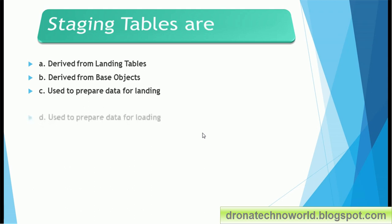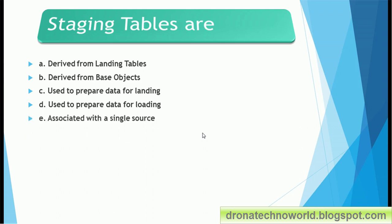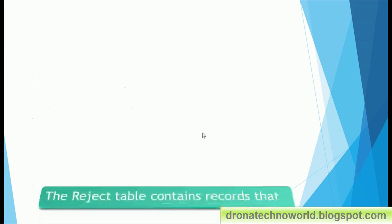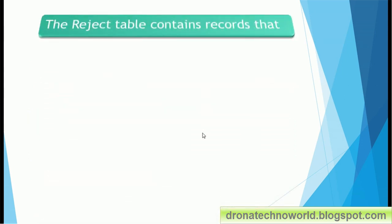Next: staging tables — option A: are derived from landing tables; option B: are derived from base objects; option C: are used to prepare data for landing; option D: are used to prepare data for loading; option E: are associated with a single source. The correct options are: staging tables are derived from base objects, are used to prepare data for loading (when you run the load job the data is pushed from staging into the base object table), and are associated with a single source — if you have three sources there will be three staging tables.